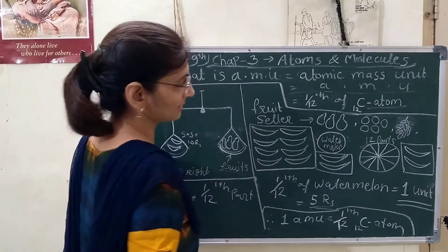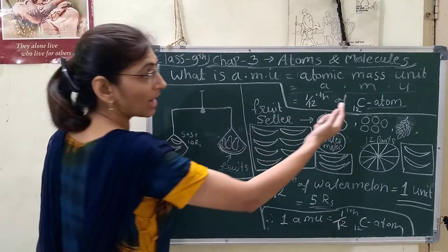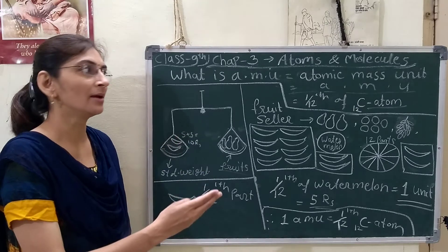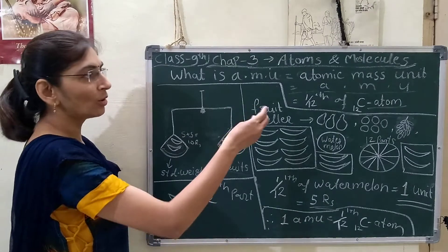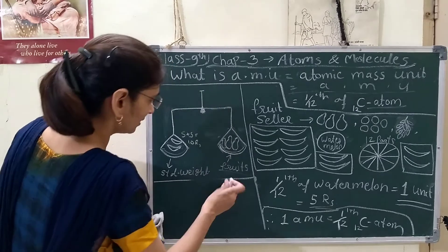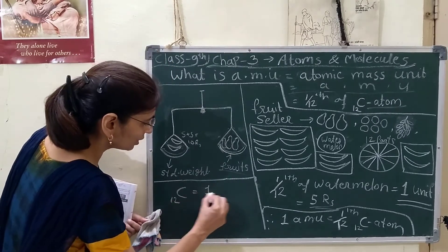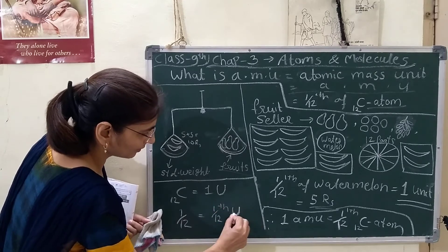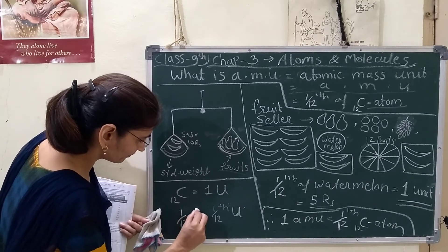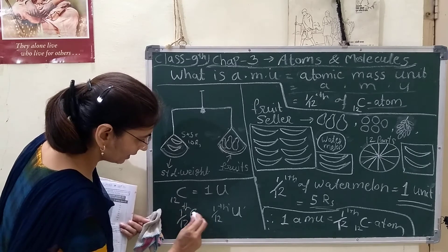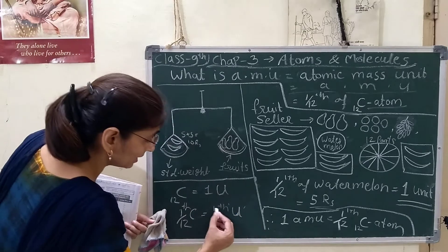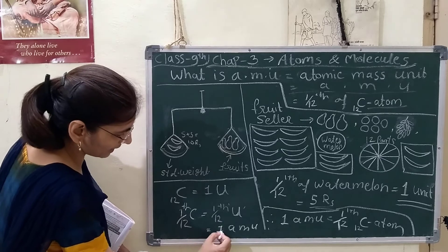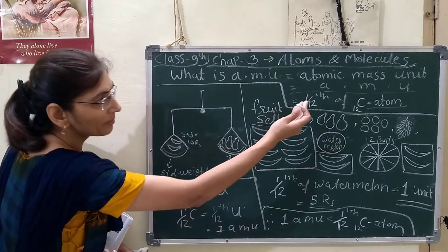Similarly, the scientist considered the carbon atom — specifically the carbon-12 atom — and divided it into 12 parts. Carbon-12 atom has a certain weight, and if C-12 is considered 1 unit, then one twelfth of carbon atom must be considered one twelfth of a unit. So one twelfth of carbon-12 atom was taken as a small unit for measuring atomic mass.